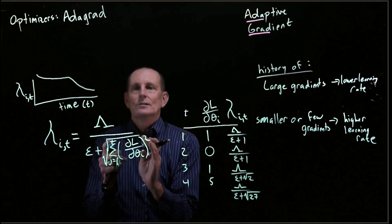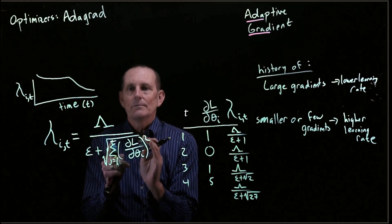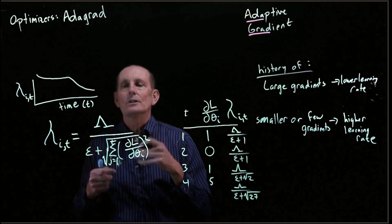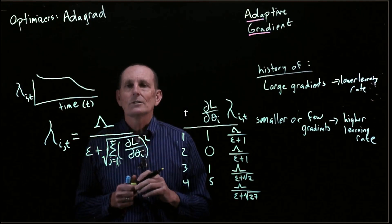Because this summation can only get bigger over time, and therefore the denominator can only get bigger, so the total fraction can only get smaller.